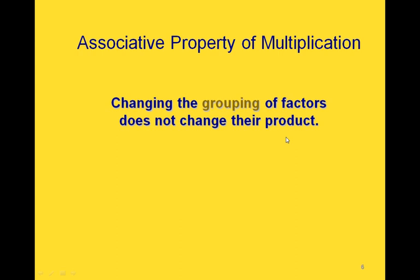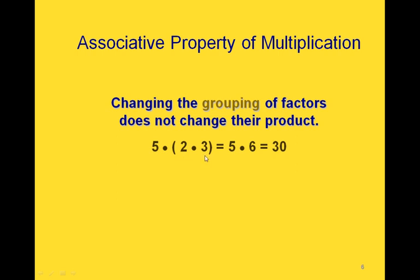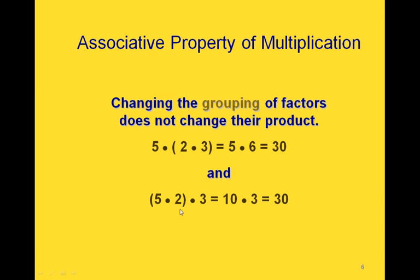The associative property of multiplication says that the grouping of the factors doesn't change their product. We can group with parentheses, which means we would multiply the 2 and the 3 first, giving us 5 times 6, which is 30. Or we could group the 5 and the 2 together, multiply those first to get 10 times 3, which is still 30.